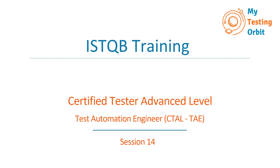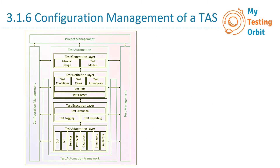Hi everyone and welcome back to another session of Test Automation Engineer Certification. So far in the previous sessions we have covered the horizontal layers of test automation architecture: the test generation layer, test definition layer, test execution layer, and test adaptation layer. Apart from these four horizontal layers, there are also interfaces to three management layers, and configuration management is one of them — this is what we will be covering in today's session in detail.